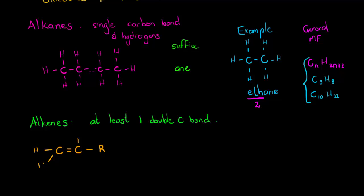All of the remaining positions can also be substituent groups — just somewhere in the structure we have a double carbon bond. Alkenes will use the suffix "-ene", while alkanes end on "-ane".